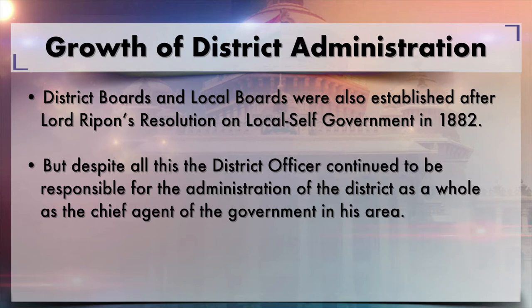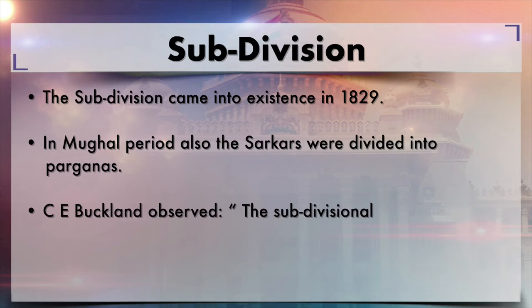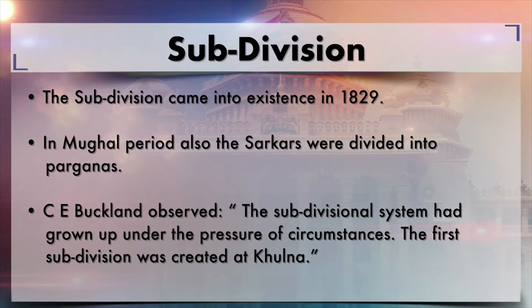Despite all this, the district officer continued to be responsible for the administration of the district as a whole, as the chief agent of the government in the area. The subdivision system also came into existence — in the Mughal period the Sarkars were divided into Parganas — and C.E. Buckland observed that the subdivision system grew under the pressure of circumstances. The first division was created in Bengal at Khulna, now in Bangladesh.